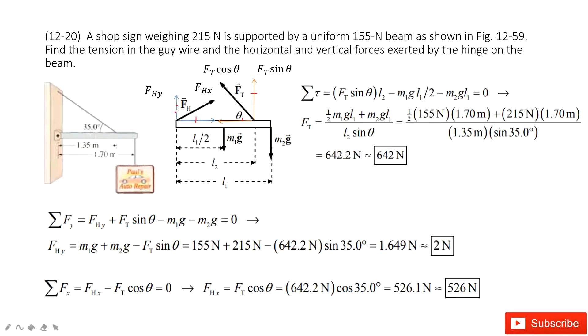First, we need to make sure the net torque is zero. So we select this point as the rotation axis. The torque from this point is zero. And then, we look at Ft sin θ, which is perpendicular to the length L2. So we have Ft sin θ times L2 pointing up.